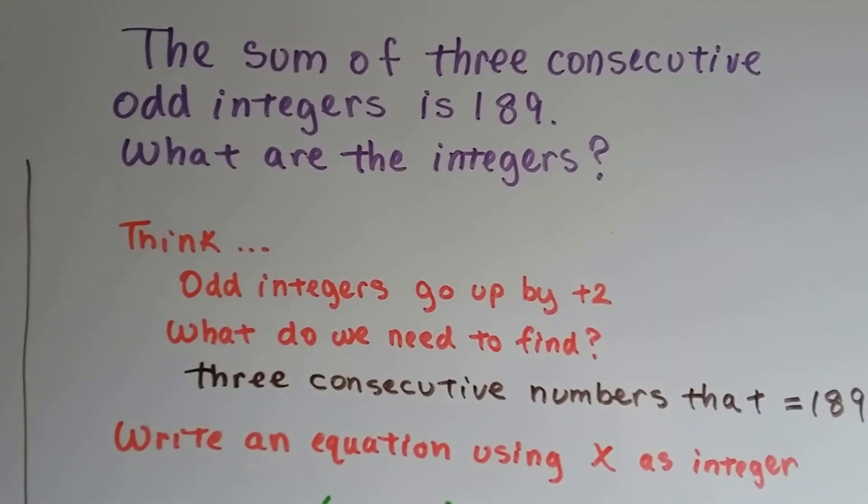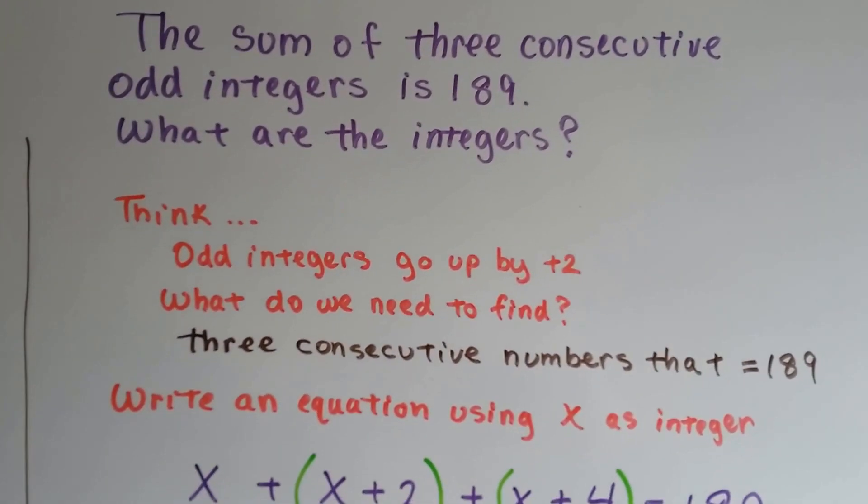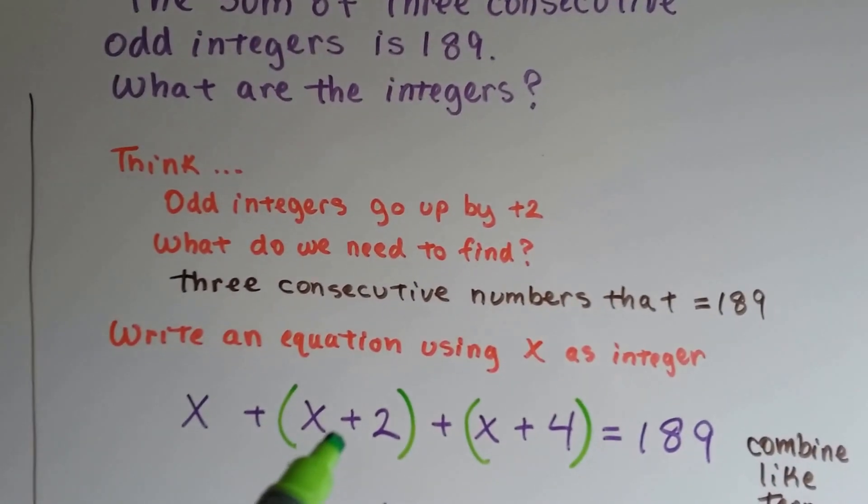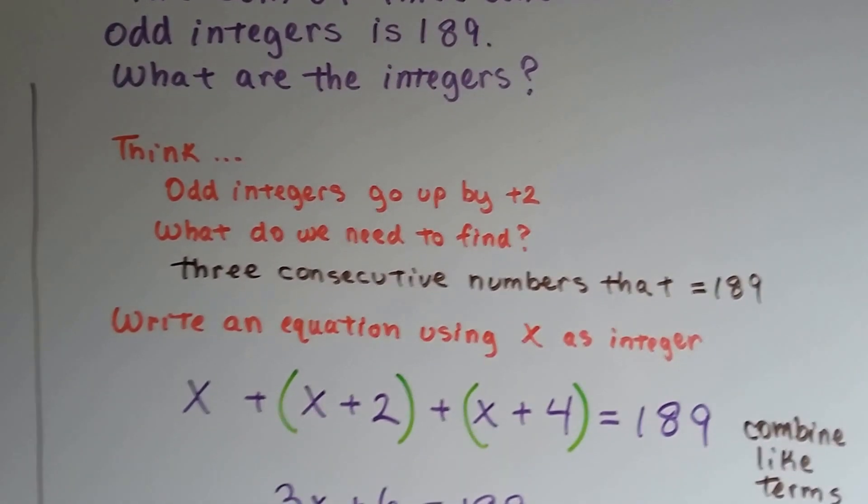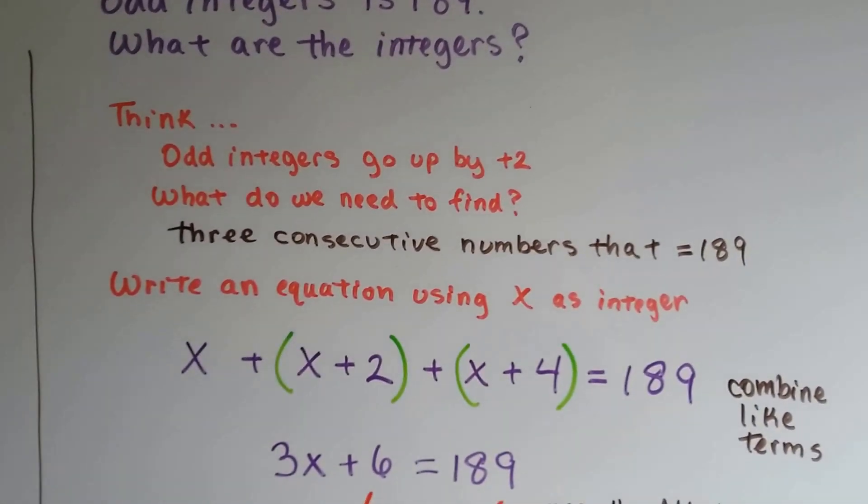So what do we need to find? Three consecutive numbers that equal 189. So we can write an equation using x as the integer. Then x plus 2 is the next one. And x plus 4 is the next one. Because it keeps going up by 2. That's going to equal 189.